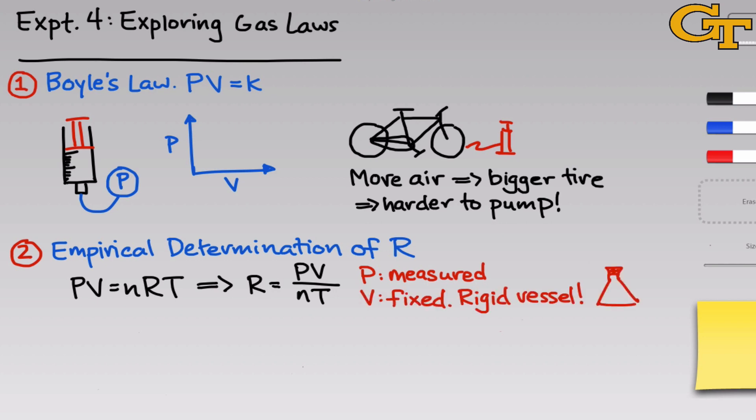The volume is perhaps the easiest variable of all to keep fixed. All we have to do is use a rigid vessel, like a piece of glassware that's been sealed off. The volume accessible to the gas is just the volume inside of this rigid vessel. Because the walls are rigid, that volume is constant throughout the experiment.